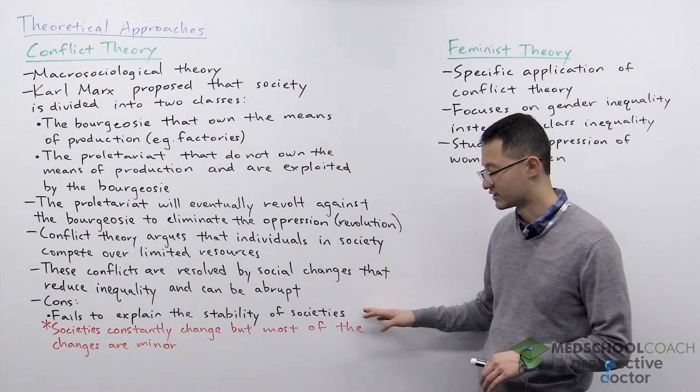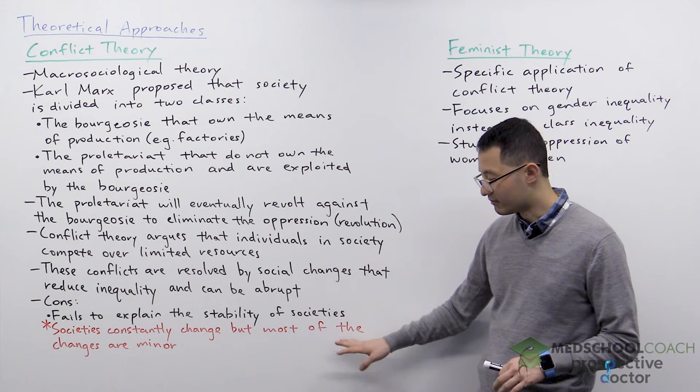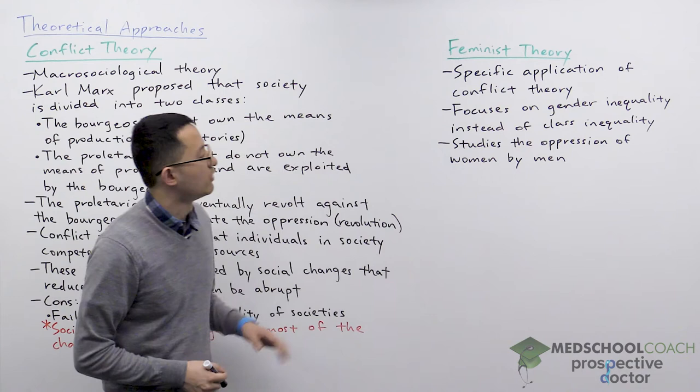Conflict theory of course also has cons. The main con is that it fails to explain the stability of societies. As we know, societies are not in constant conflict. When we look at societies they are constantly changing, but most of the changes are quite minor.